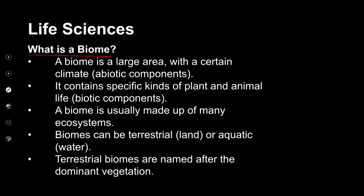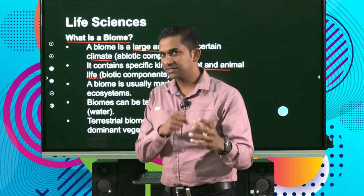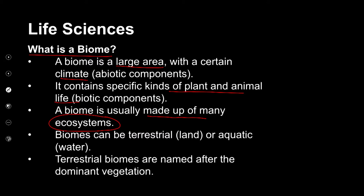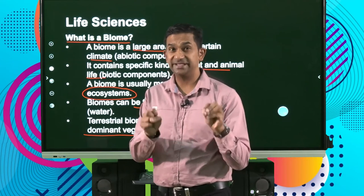As we unpack what biomes are, it's important to recognize that a biome is a large area with a certain climate — the abiotic component — which also refers to the specific kinds of plants and animals typically found in that area. Biomes are often distinguished by the type of plants and animals found there, and a biome is usually made up of many ecosystems. Biomes are named after their dominant vegetation.